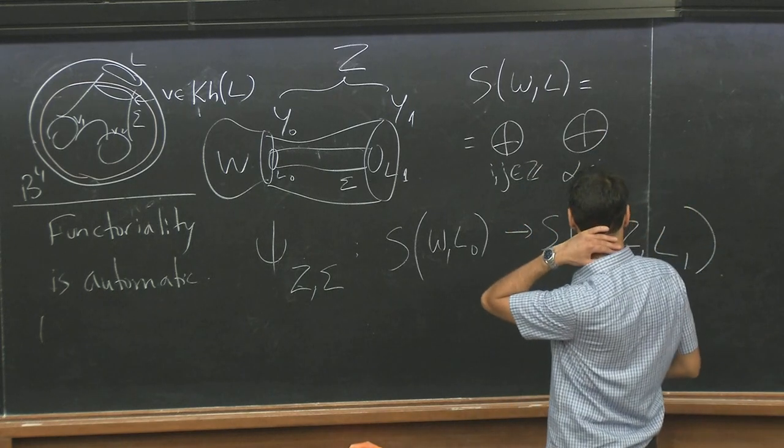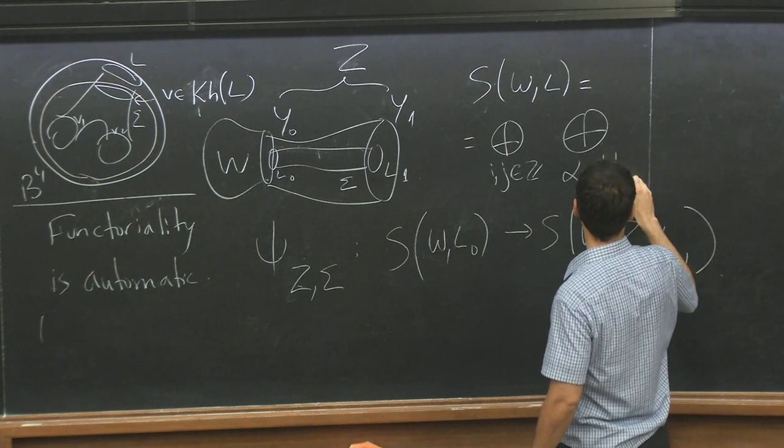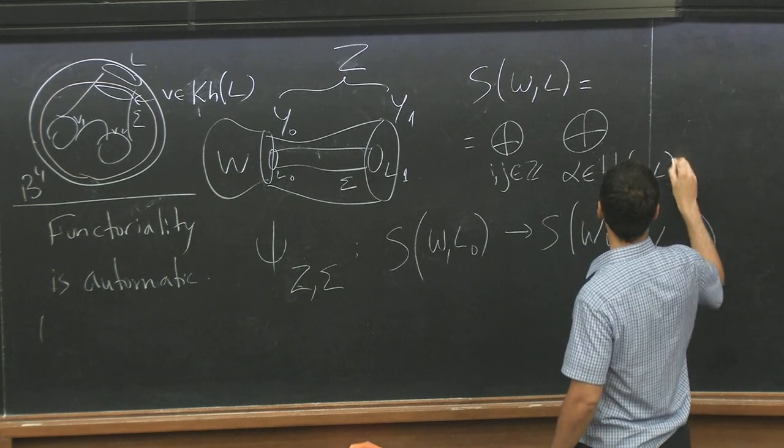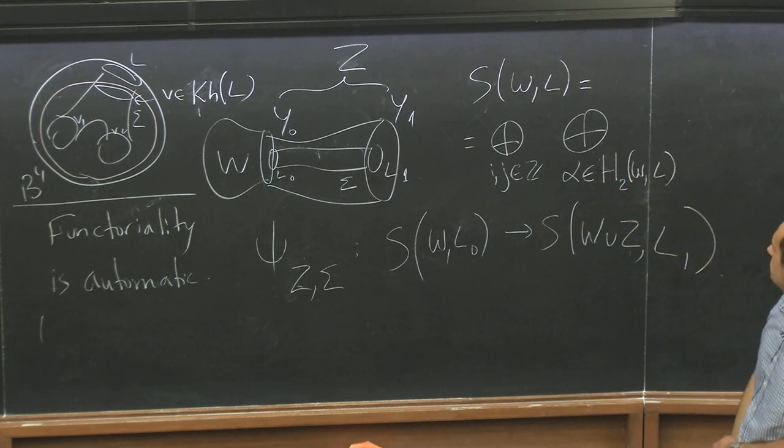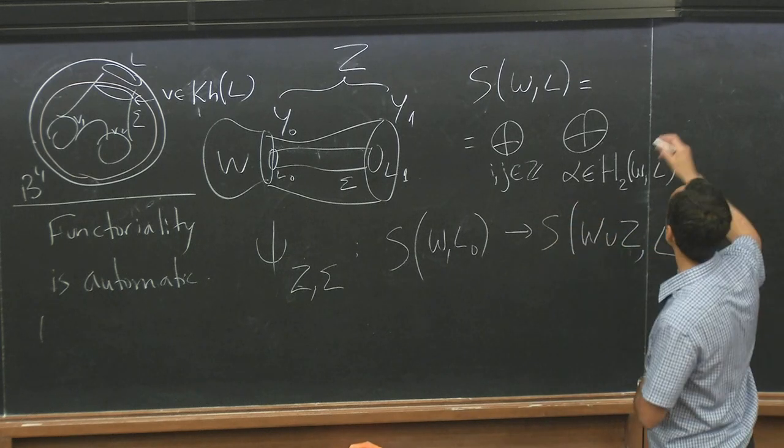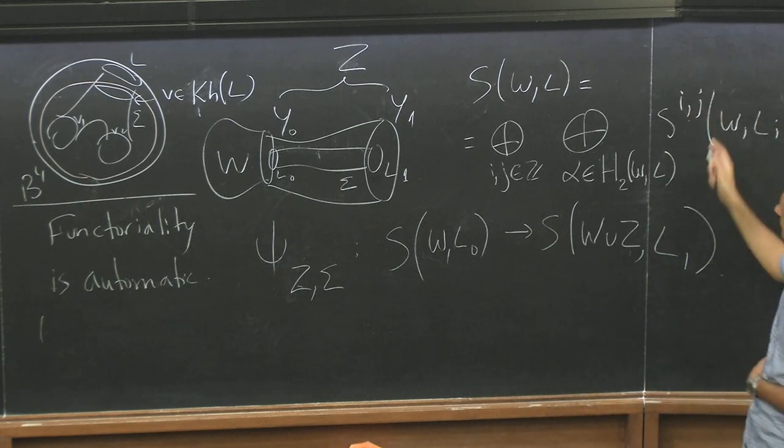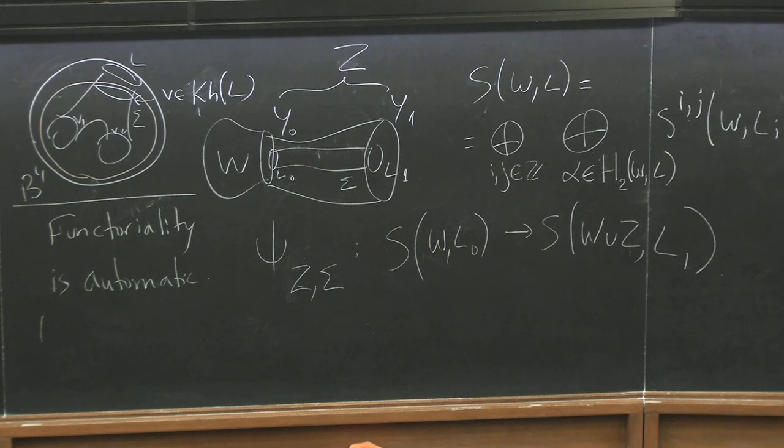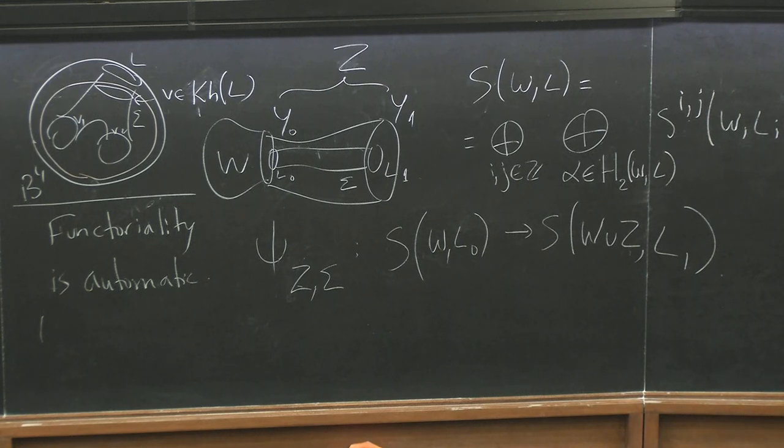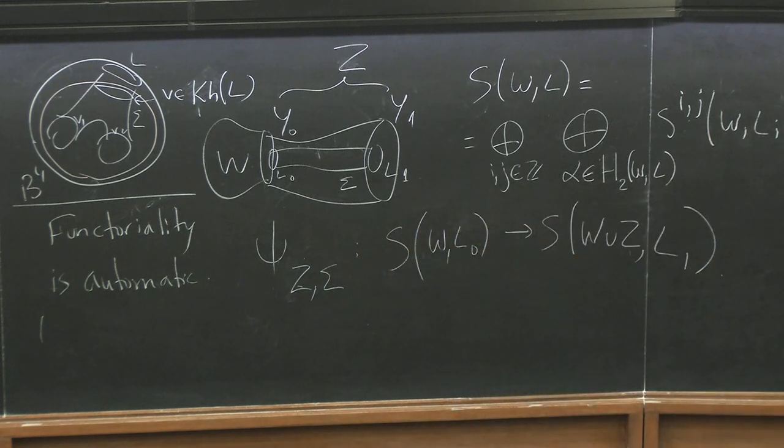What else? It also decomposes, so what is the structure? It's a direct sum over IJ in Z and a relative homology class in, well, let me just say in H2 of WL according to the relative homology class of the surface and then Sij WL alpha. So I and J are the usual bi-gradings in Khovanov homology.